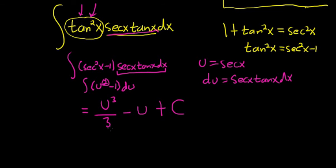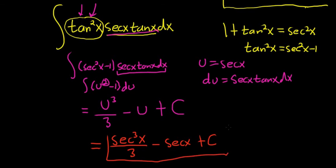The last step is to replace all of the u's with secants. This is equal to secant cubed x over 3 minus the secant of x plus c. And that is the final answer.